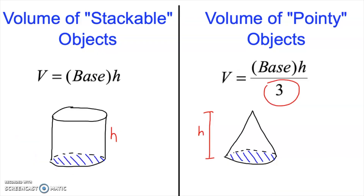That's really everything you need to know to find the volumes of pointy objects. All you do is think about what the Big B base is, times it by the height, and divide by 3. It's always one-third of the volume of what you would have gotten if you stacked congruent objects on top of each other like a stackable object.